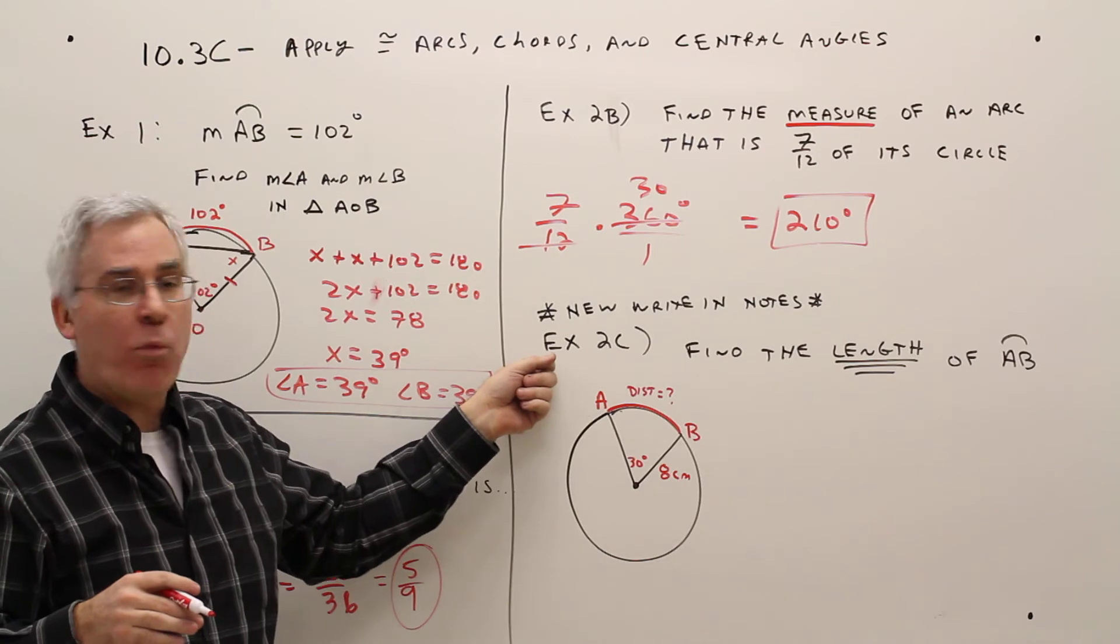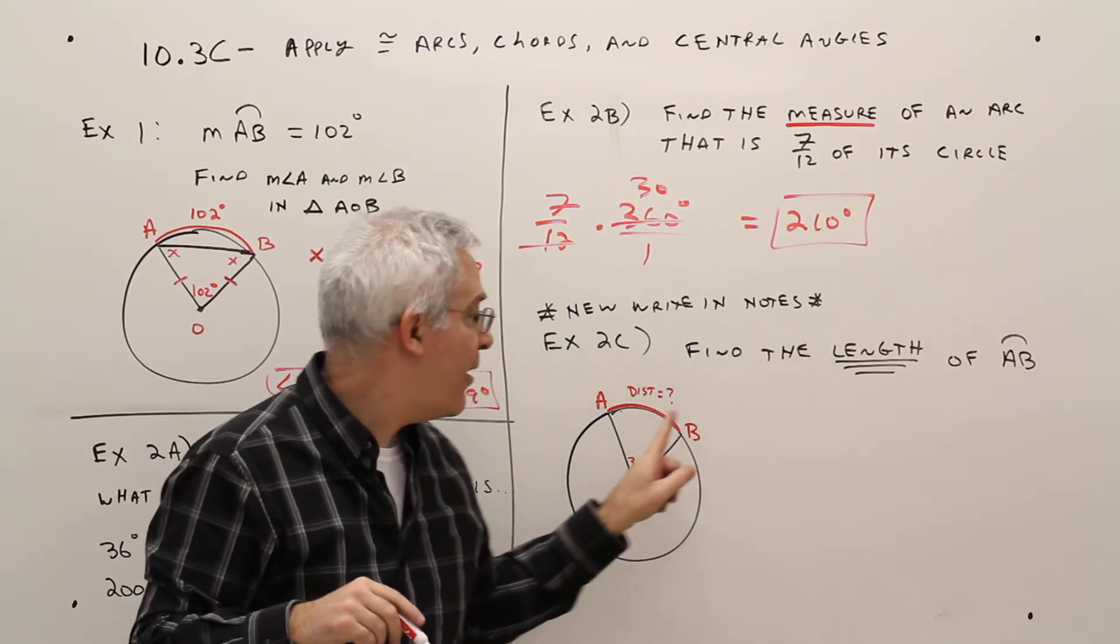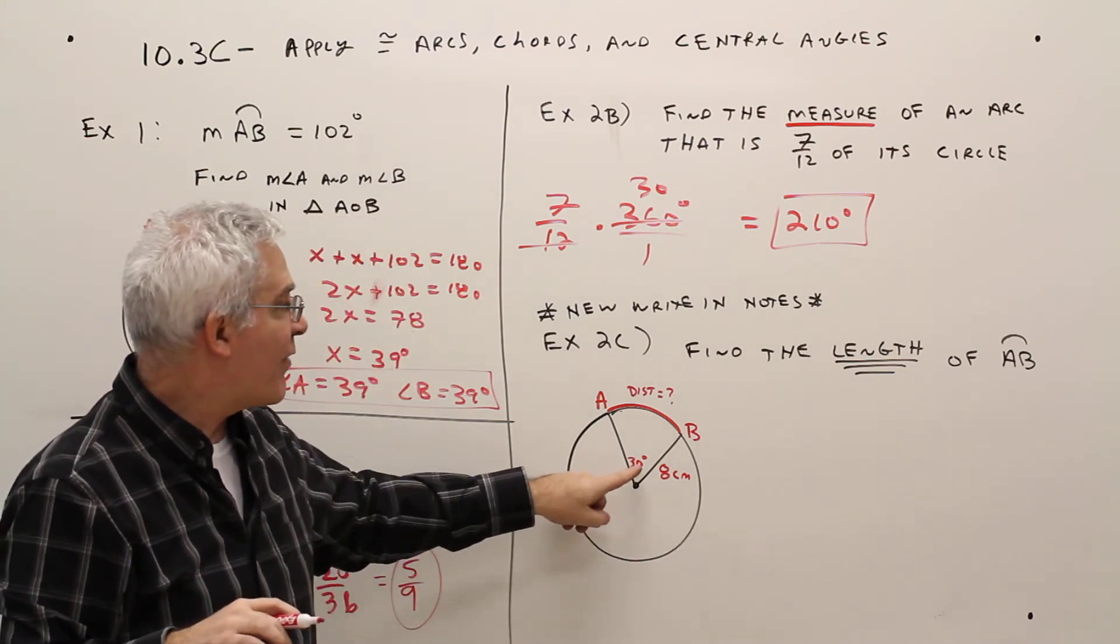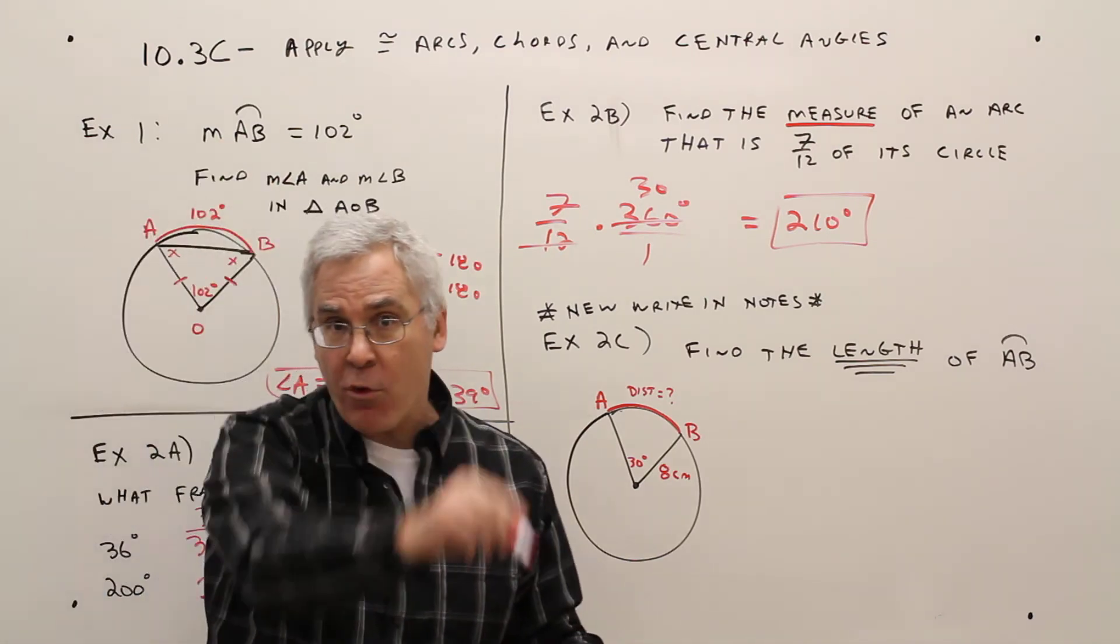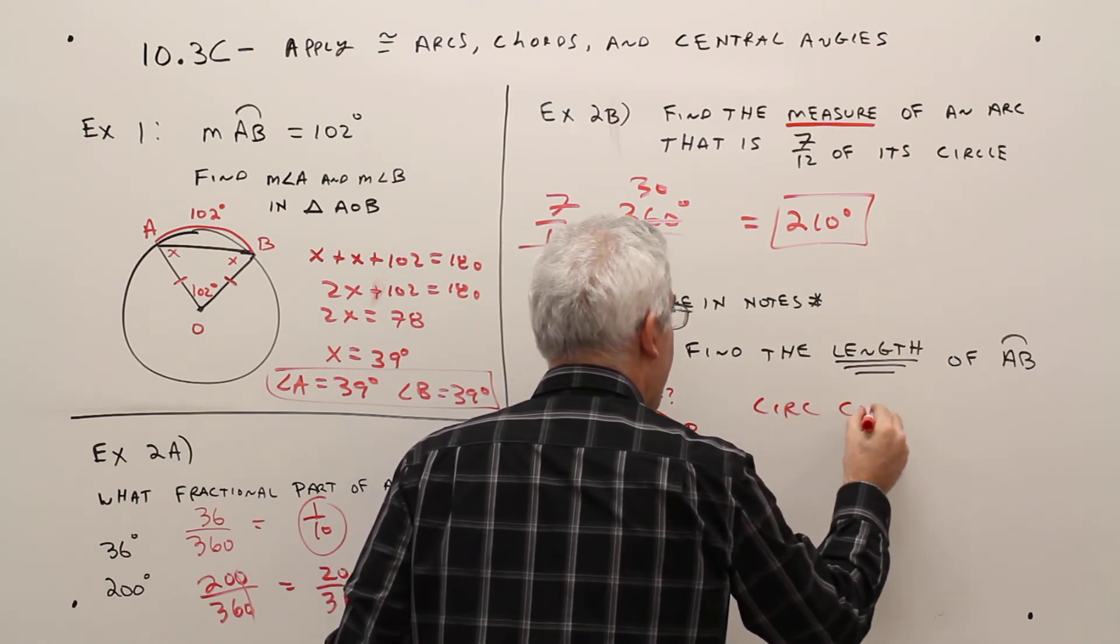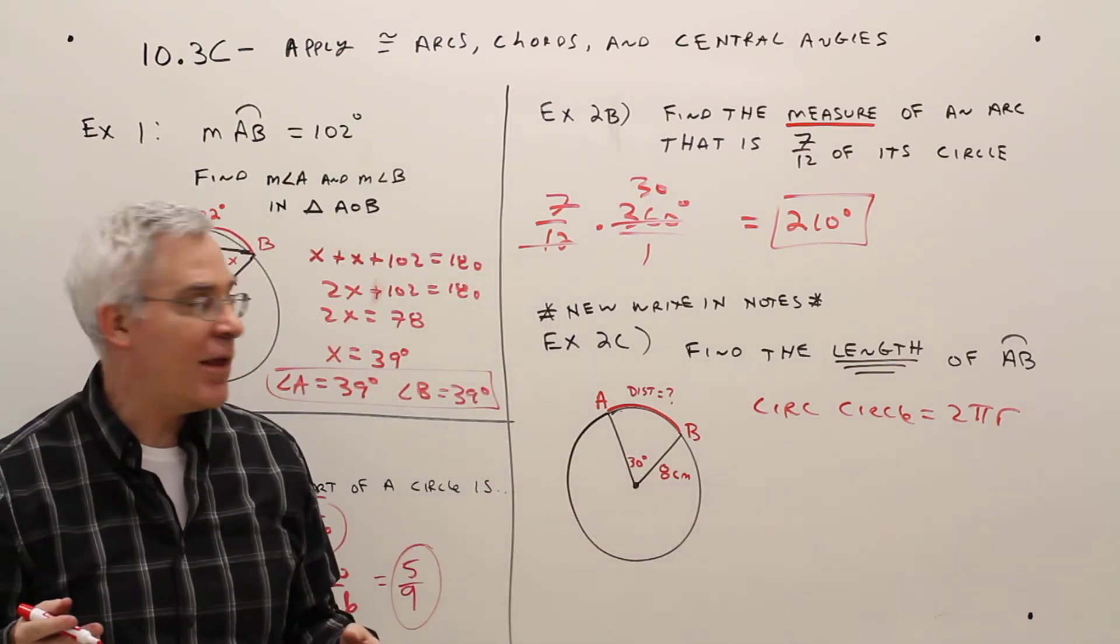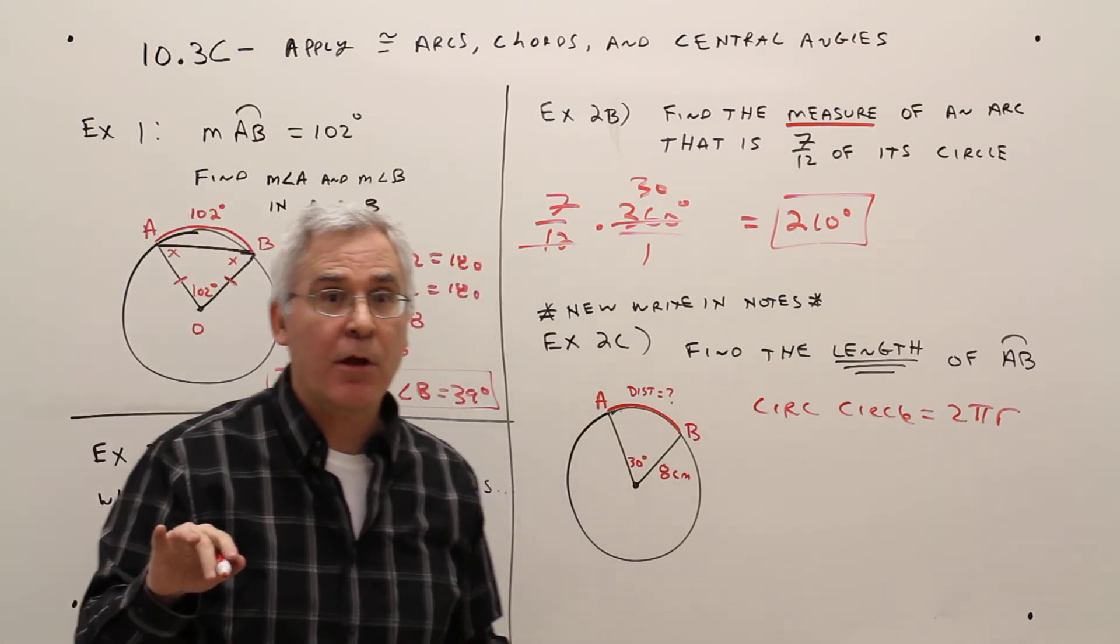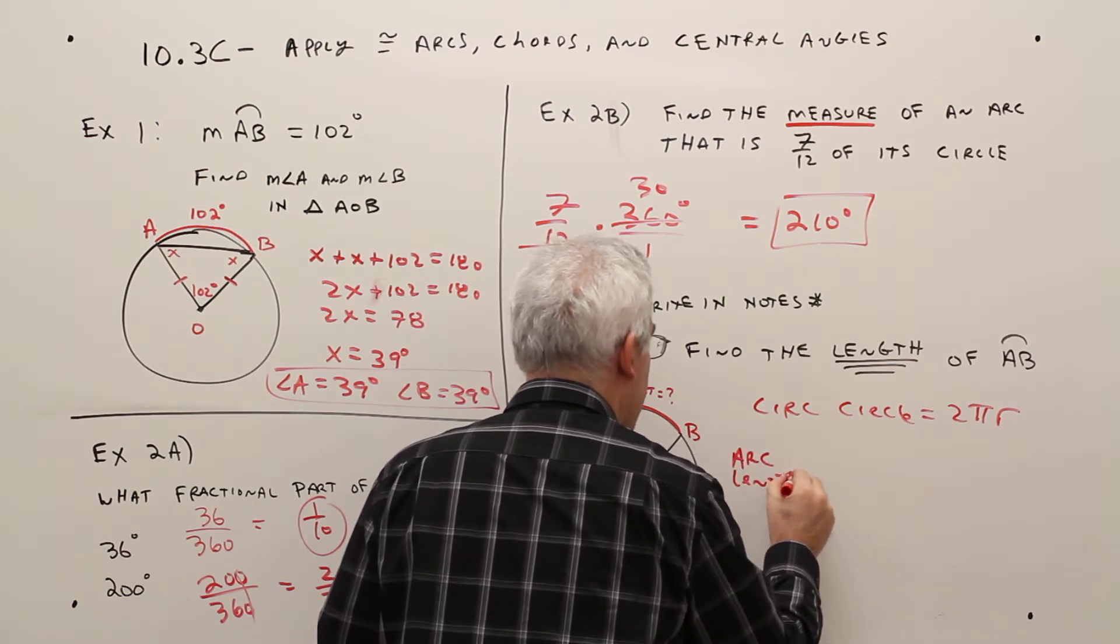And I wrote in one more example. Please put that in your notes. It's called example 2C. Find the length of arc AB. So I'm looking for the distance from point A to B along the circle. The central angle is 30 degrees, and the radius is 8 centimeters. So what you need to know is the formula for the circumference of a circle. So the circumference of a circle equals 2 pi r, or pi d, but 2 pi r is easier.